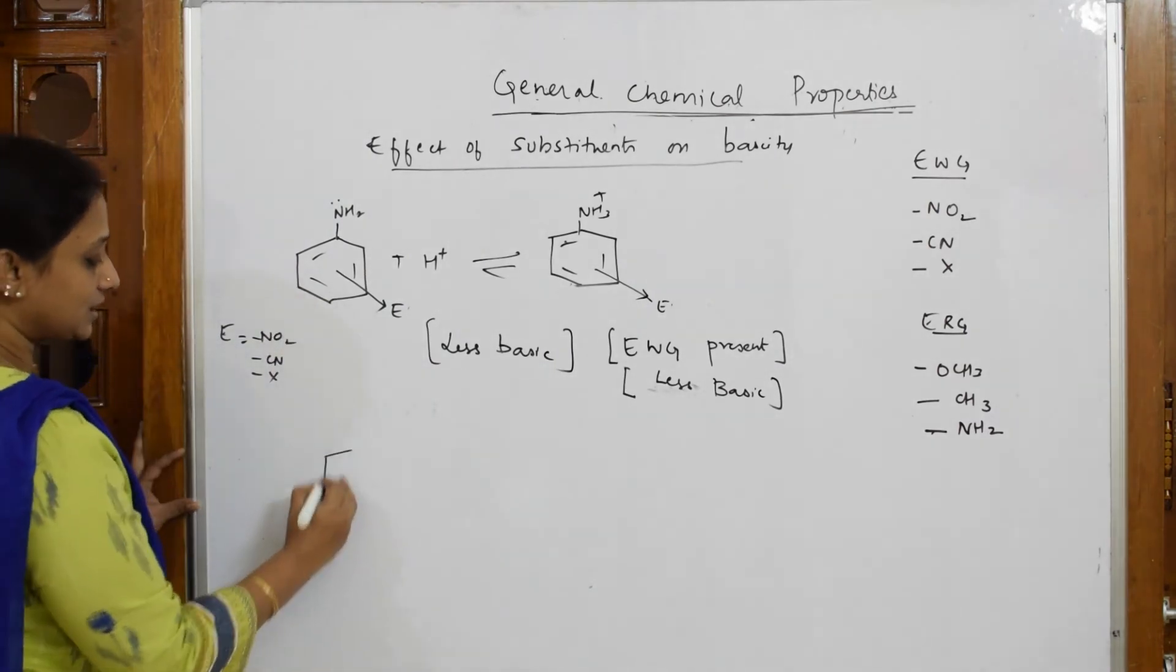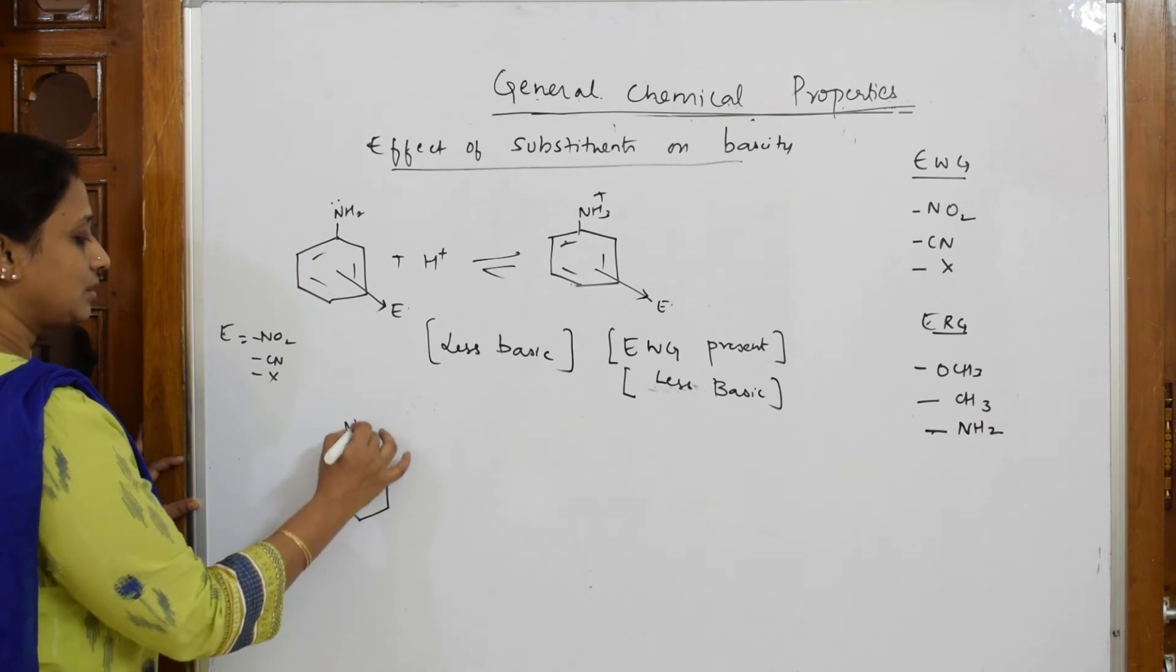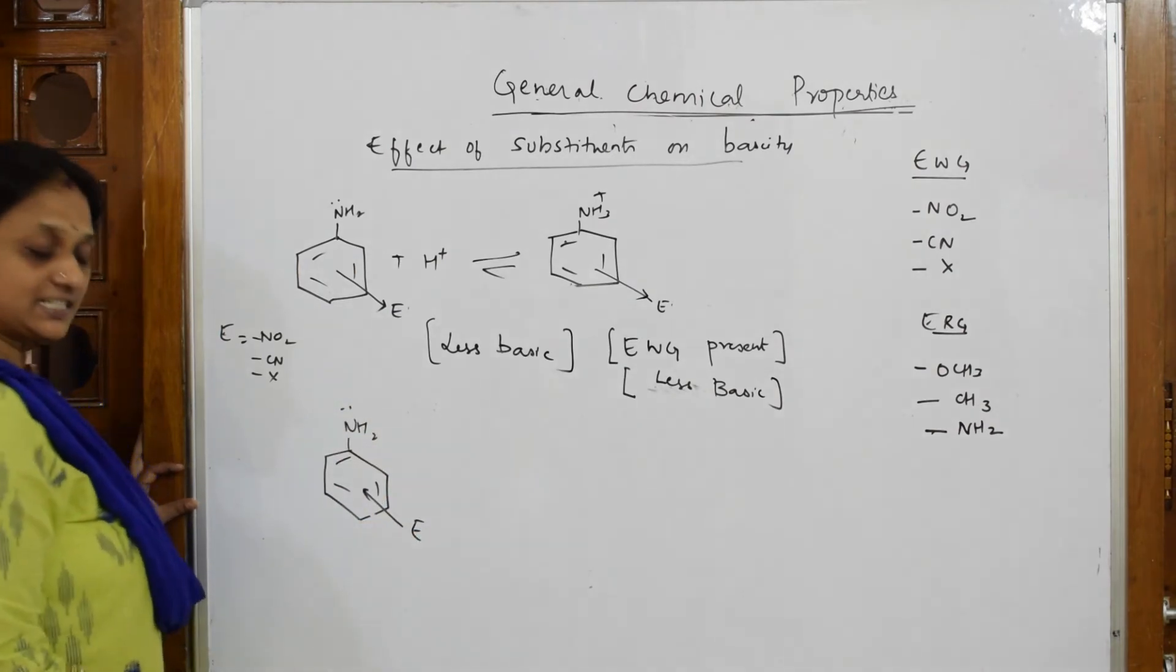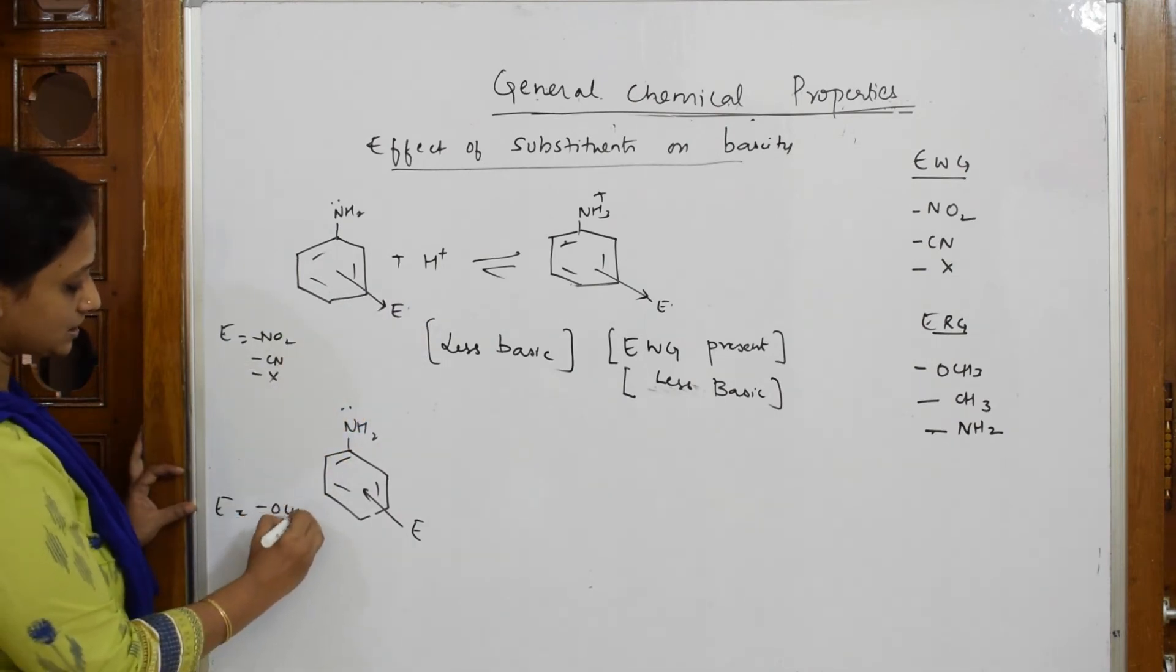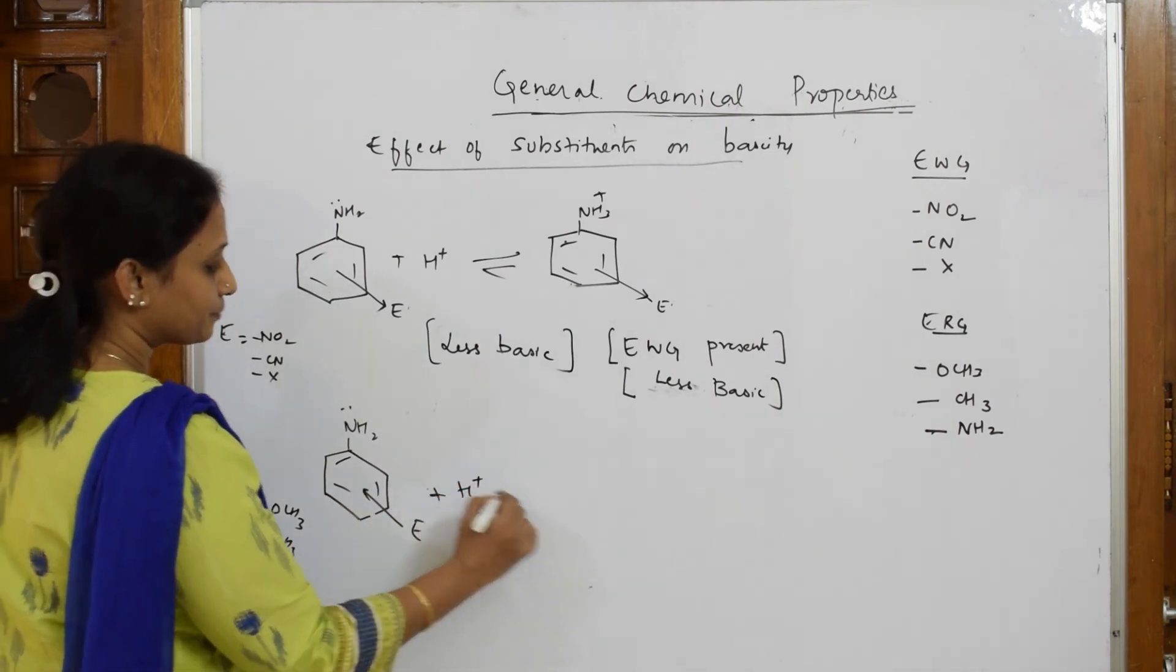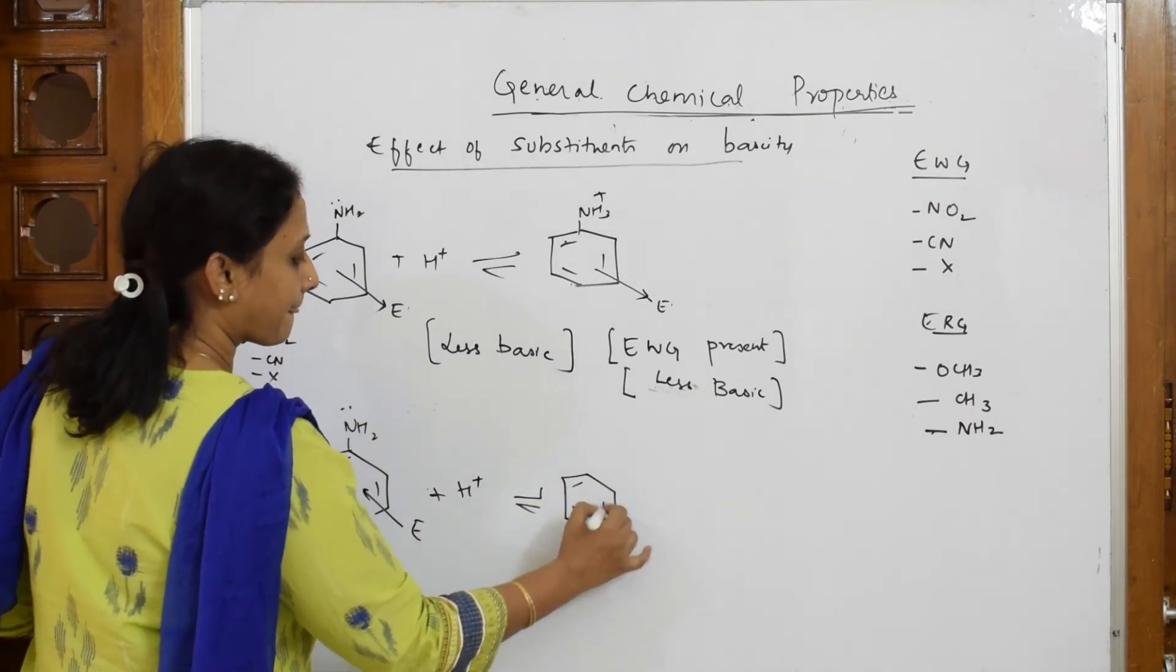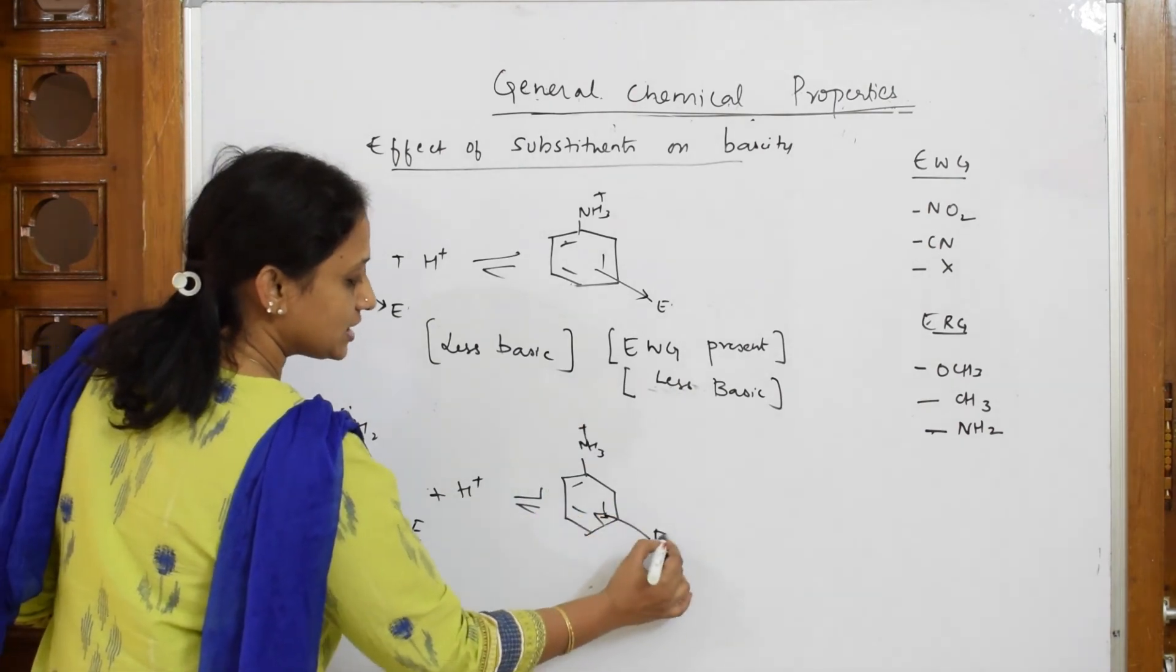Now, suppose in this particular thing, the same aniline, if you have electron releasing groups. So what are electron releasing groups? I have written here: OCH3, your CH3, and your NH2. If you have electron releasing groups, the same study here also. And anilineum ion also the same thing: NH3 plus, electron releasing groups, ERG groups.